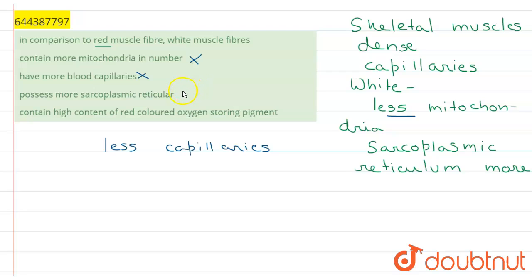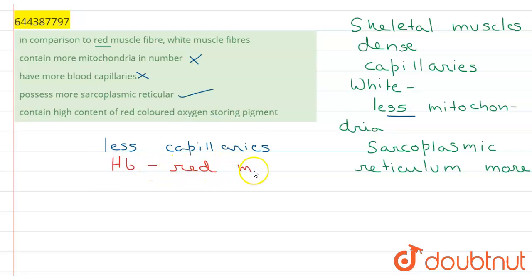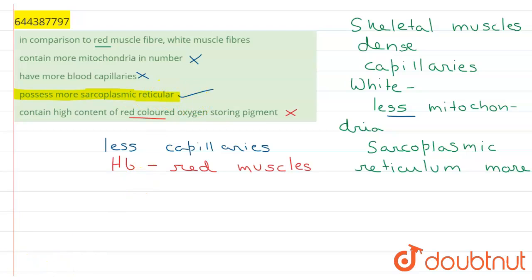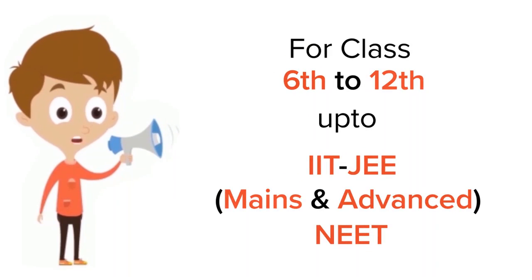The third option — 'possess more sarcoplasmic reticulum,' which is a membrane-bound cell organelle — is the correct answer. The last option is 'contain high content of red-colored oxygen-storing pigment,' which refers to myoglobin. However, myoglobin is more abundant in red muscle fibers, which appear red because they contain more of this red-colored pigment. So this option is also wrong. White muscle fibers possess more sarcoplasmic reticulum — this is the right answer.